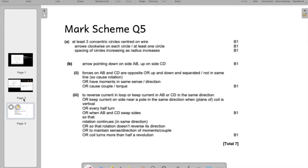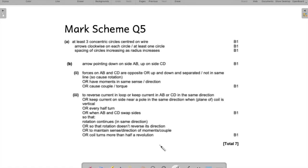Let us refer the mark scheme now and see how do we gain all the three marks in this question. At least three concentric circles centered on the wire. The center of the circle should be the wire. Shows clockwise on each circle. You have to show arrows in the clockwise direction. So, both the points we have done. One mark.